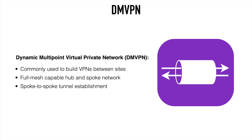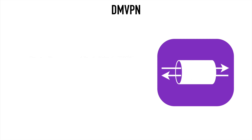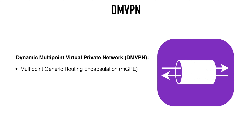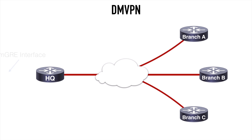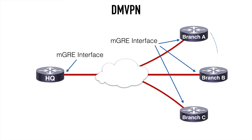The tunnels between the spokes can be established and torn down on an as-needed basis. DMVPN uses Multipoint Generic Routing Encapsulation, or MGRE, to accomplish this. MGRE supports dynamic routing protocols, and it allows a single router interface to form multiple GRE tunnels. With a normal VPN, you may have a hub and spoke topology where you configure the HQ router with an MGRE interface, allowing for multiple tunnels to form so that you can interconnect your sites. Optionally, we can configure all of the routers with MGRE interfaces, which would allow us to have DMVPN tunnels form between the spokes themselves as needed. This is a much more scalable option for a multi-site business.